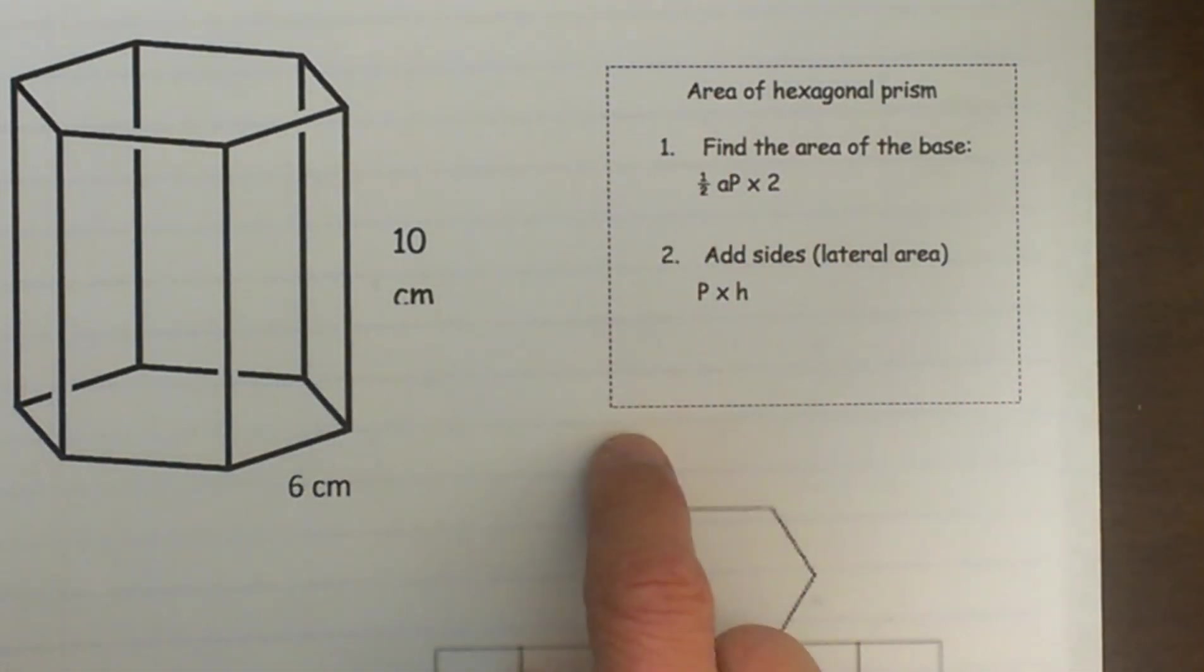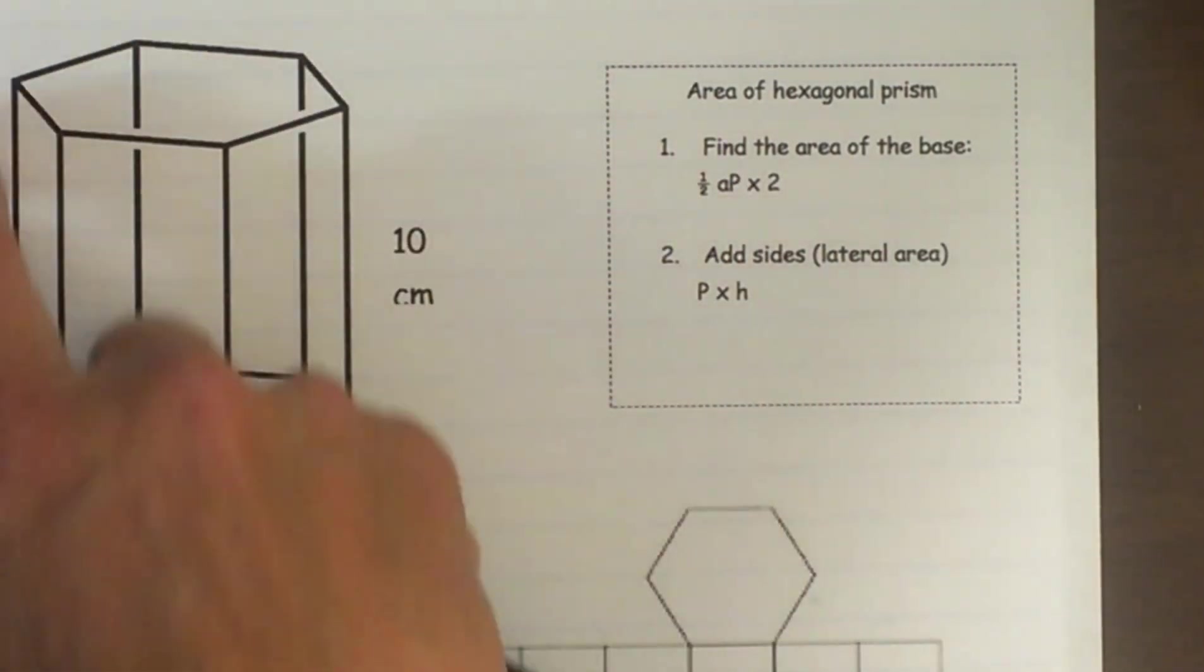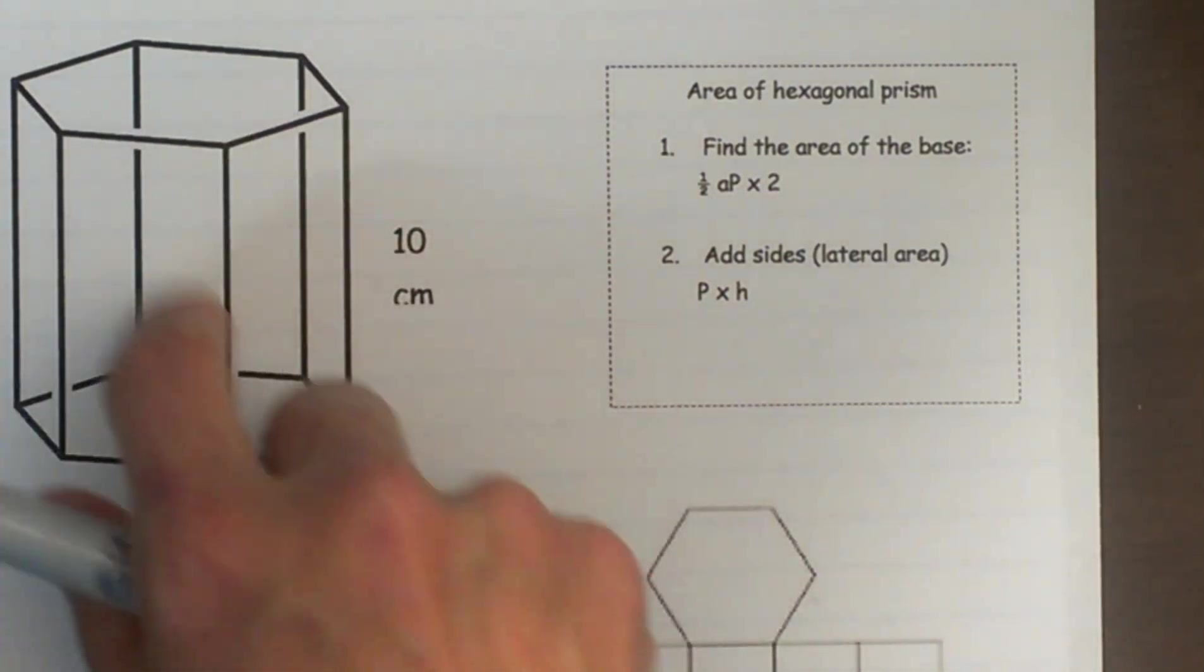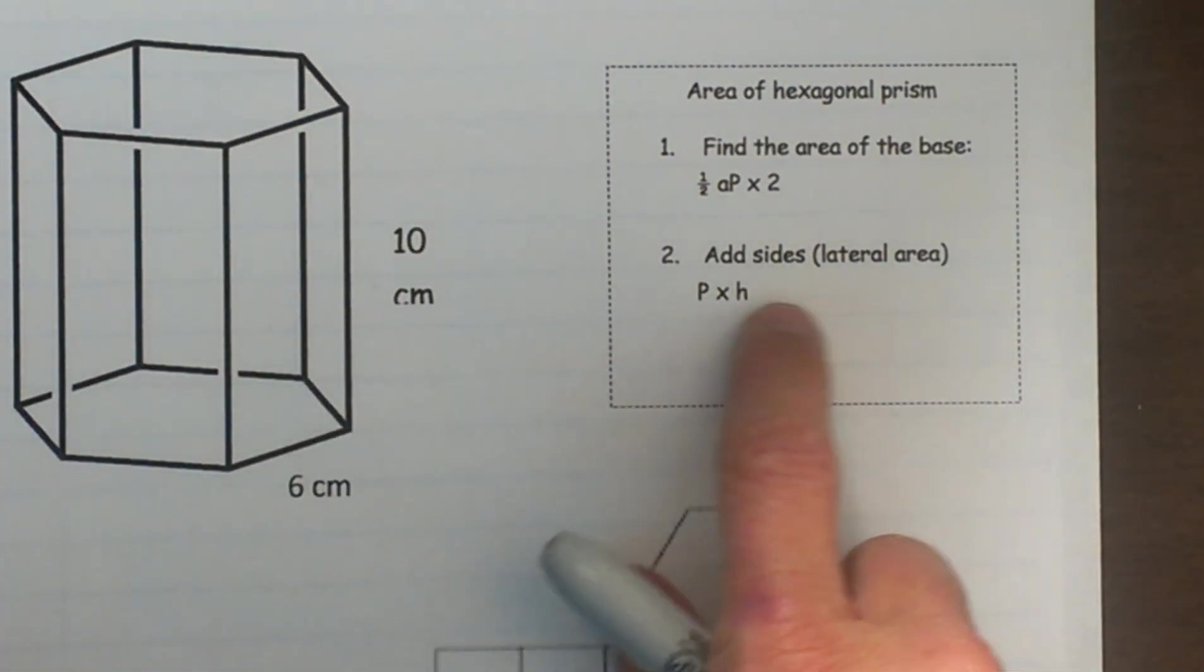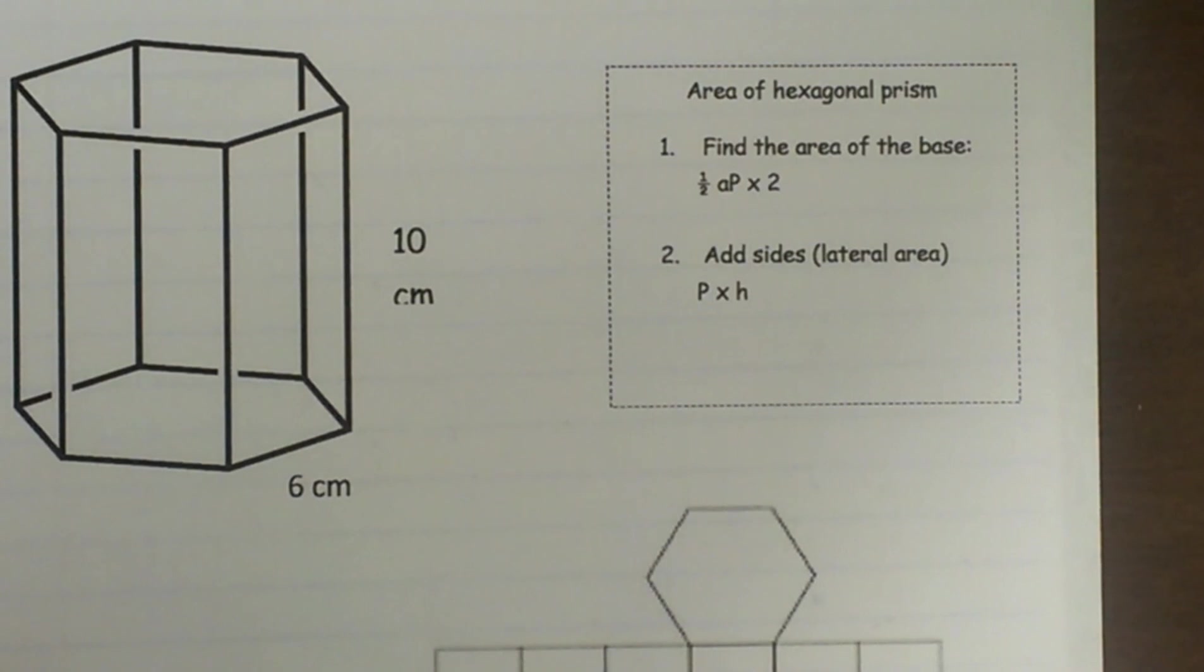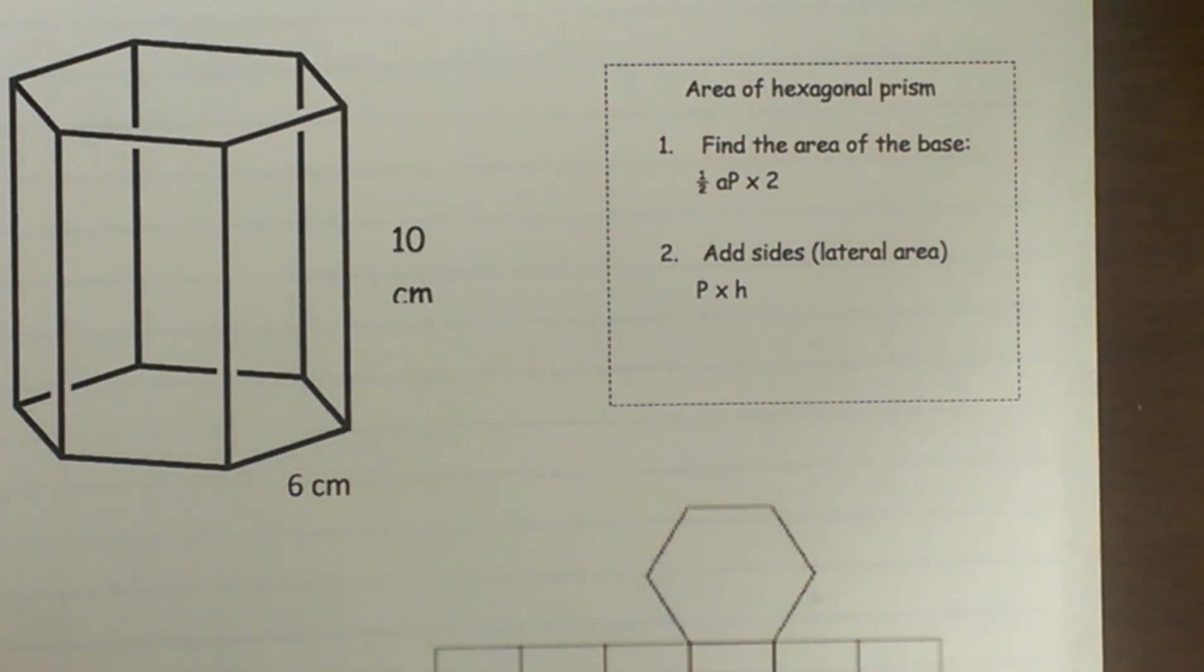We are going to do that first and then we are going to add what we call the lateral area or these sides around here. To get that we are going to take the perimeter of the base times the height of the whole thing, the height of the prism, and we can find the surface area by adding those two together.